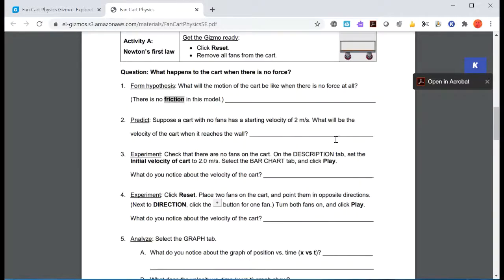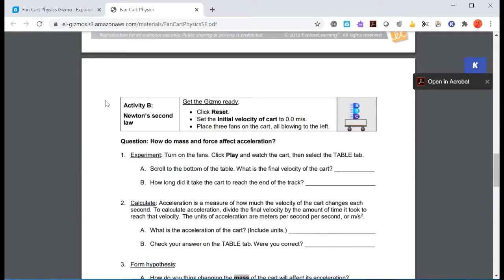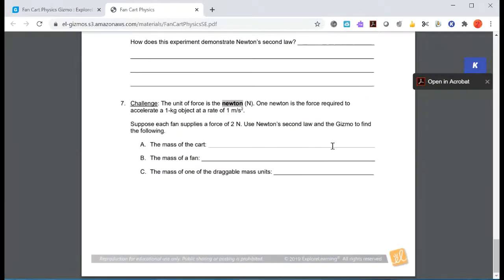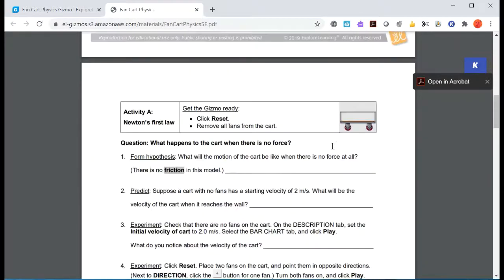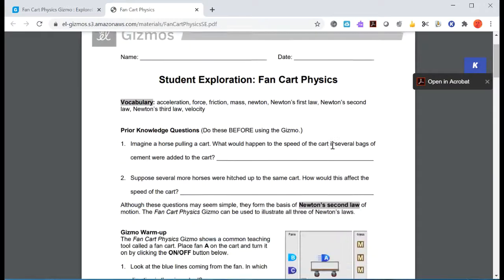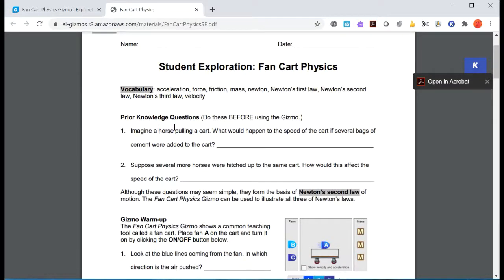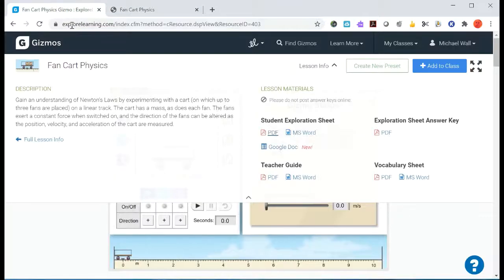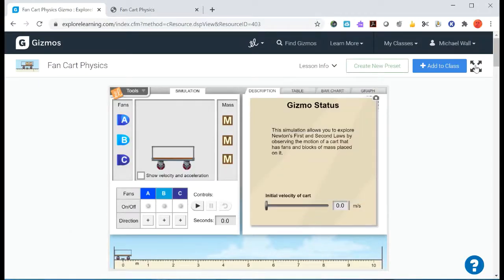So this should look familiar: Newton's first law, that would be Activity A, and Activity B is for Newton's second law. We're going to be doing Activities A and B for this particular Gizmo. It's also a good idea to do the introduction, the prior knowledge questions, and the warm-up, just so that you understand exactly how the Gizmo works.